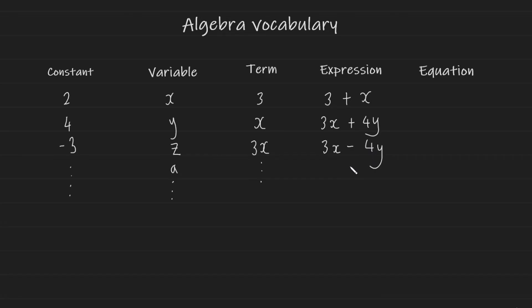An equation can be a constant, variable, term, or expression with an equal symbol. So if we take a look at the following one, x equals 4, here we have a variable equal to a constant. This entire thing here is known as an equation.